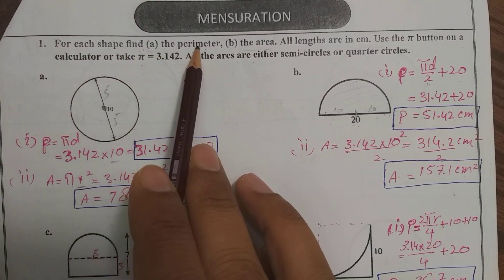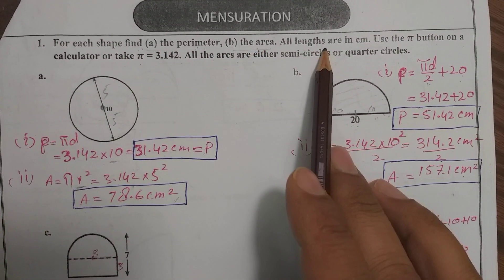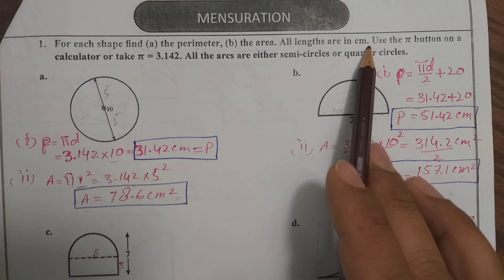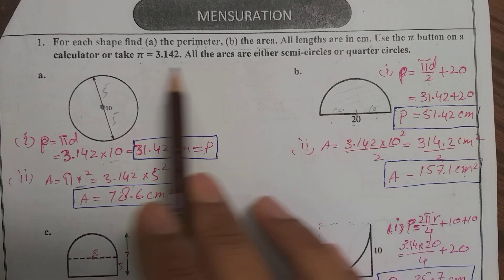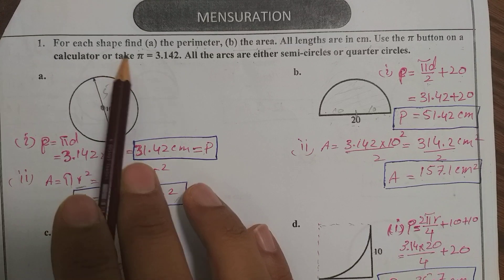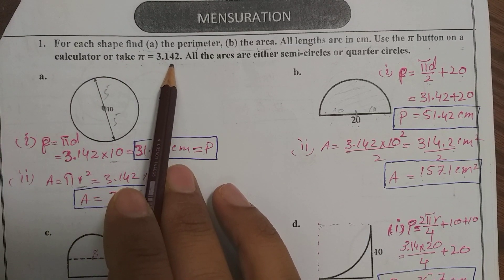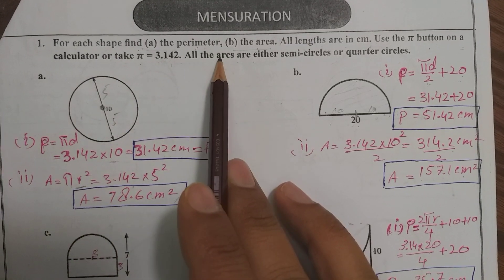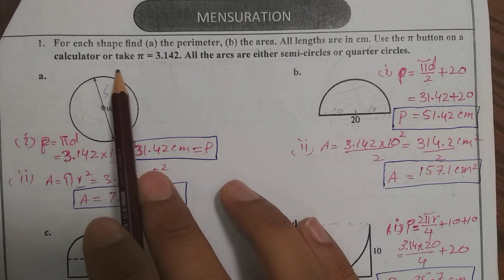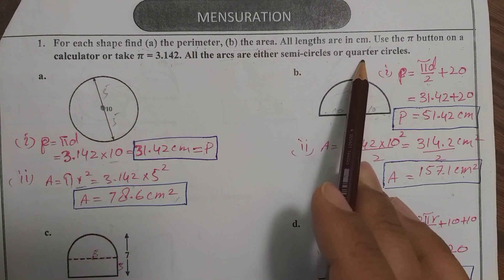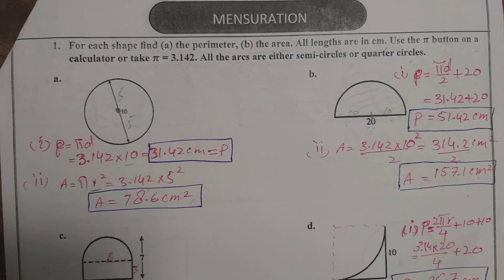In the first question we are given: for each shape, find the perimeter and the area. All lengths are in centimeters. Use the pi button on a calculator or take pi as 3.142. All arcs are either semicircles or quarter circles.